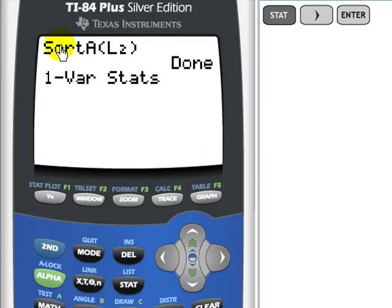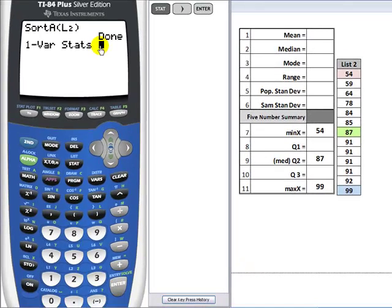Now, the command from before is still on the home screen. That's okay. I don't have to clear it. On this line, 1-variable statistics, again, the calculator is asking, where's the data? I could use either list 1 or list 2. Since I've sorted the data in list 2, I'm going to reuse list 2. Second, number 2, and Enter.